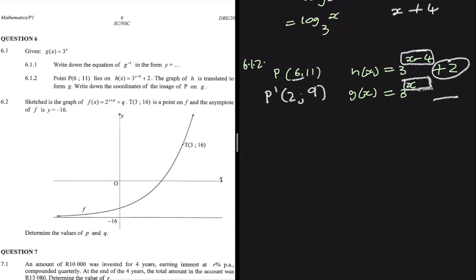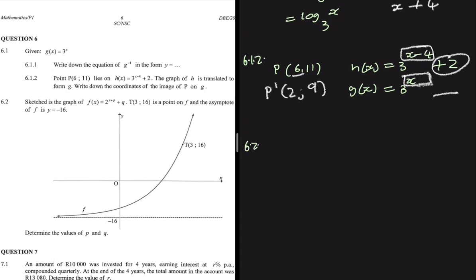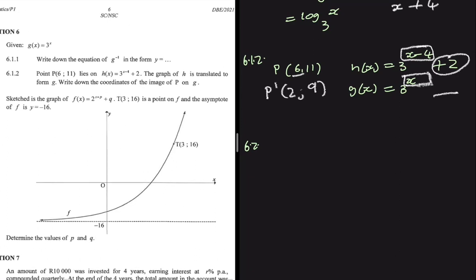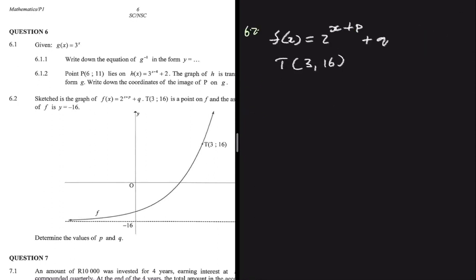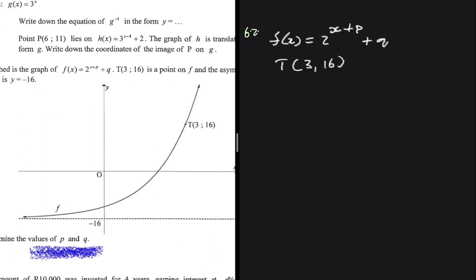Moving to question 6.2, we have f of x equals 2 to the power (x plus p) plus q, with a point T at coordinates (3, 16) on f. The asymptote of f is y equals negative 16, which we can clearly see on the graph. The question asks us to determine the values of p and q.